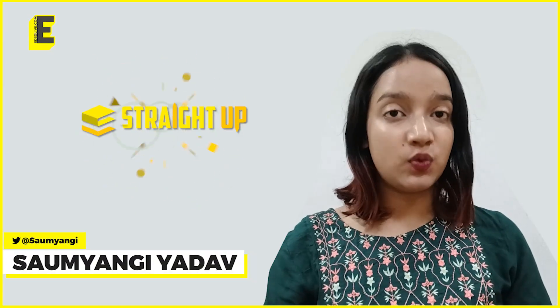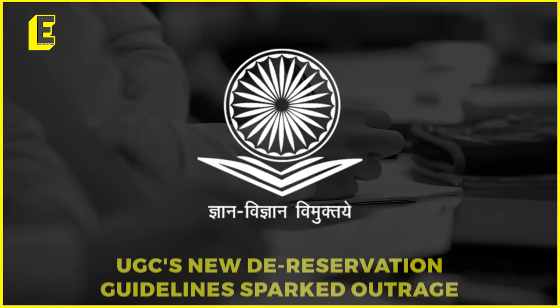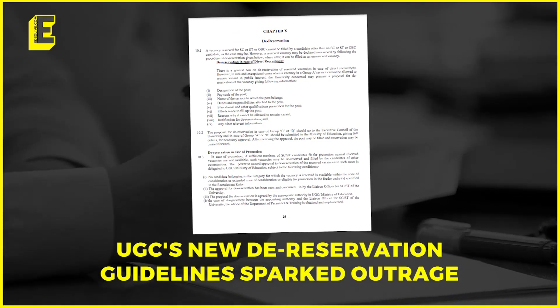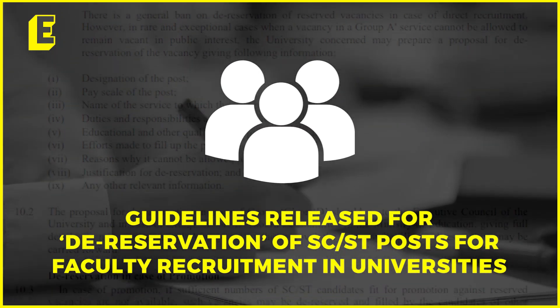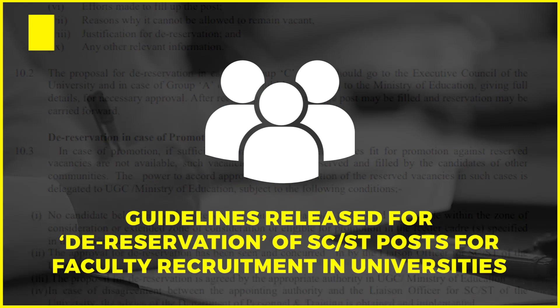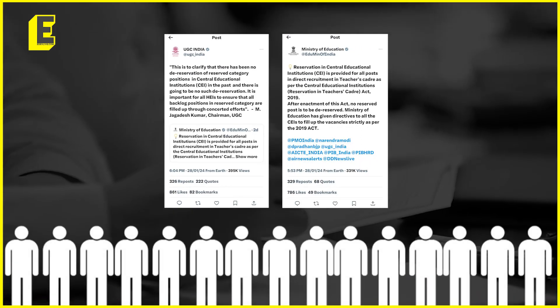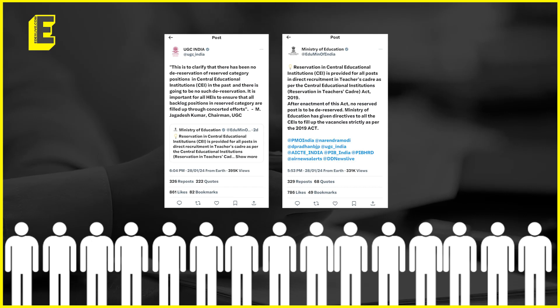Hello, this is Soumyangi Yadav and you are watching Straight Up by edXLive. On Saturday, January 27th, the University Grant Commission released draft guidelines for implementation of reservation in higher education institutes for public feedback. The guidelines sparked outrage over de-reservation of SC/ST posts in universities for faculty recruitment. While both UGC and Ministry of Education have issued clarification that faculty positions reserved for SC/ST and OBC candidates will not be open to the general category. In our conversation with M.S. Netrapal, an IRS officer and author, we tried to understand what these guidelines were and why they received backlash from academic circles.